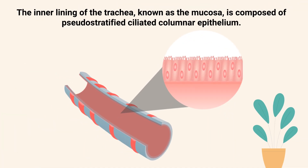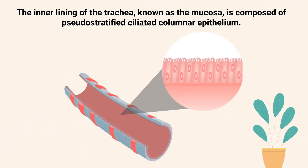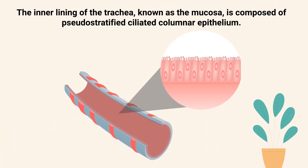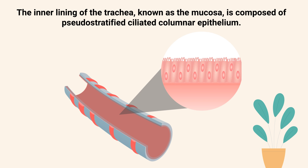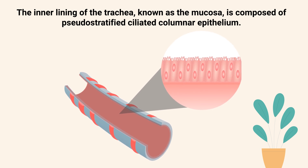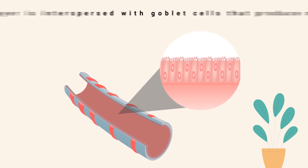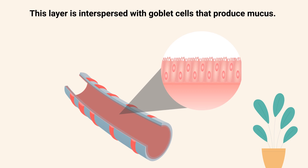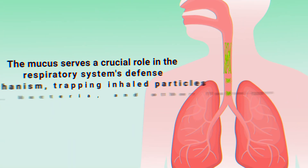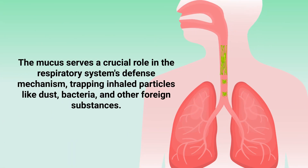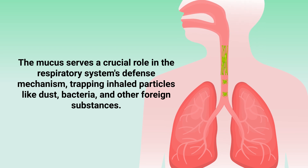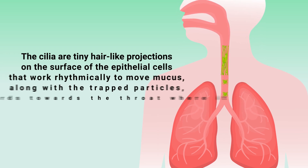The inner lining of the trachea, known as the mucosa, is composed of pseudostratified ciliated columnar epithelium. This layer is interspersed with goblet cells that produce mucus. The mucus serves a crucial role in the respiratory system's defense mechanisms, trapping inhaled particles like dust, bacteria, and other foreign substances.